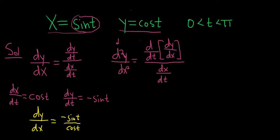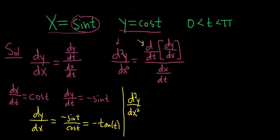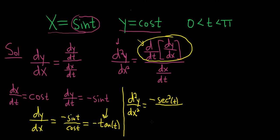Now we need to find the derivative of dy/dx with respect to t. We can rewrite dy/dx = -sin(t)/cos(t) in a more familiar way: this is simply -tan(t). So now we can find the second derivative. The second derivative has d/dt of dy/dx on top, and the derivative of tangent is secant squared, so we get -sec²(t) on top and dx/dt = cos(t) on the bottom.